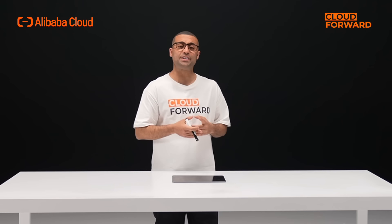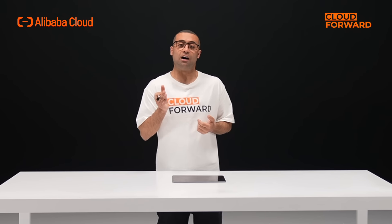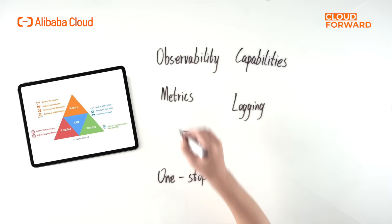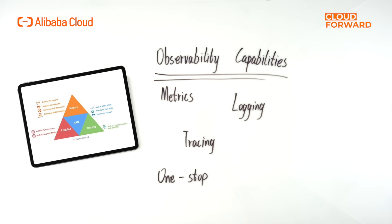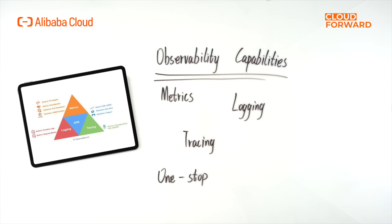The monitoring center is the culmination of FC's observability capabilities, integrating the capabilities of metrics, logging, and tracing. It can preview metrics, view logs, and analyze tracing on one site, striving to achieve one-stop problem detection and investigation.